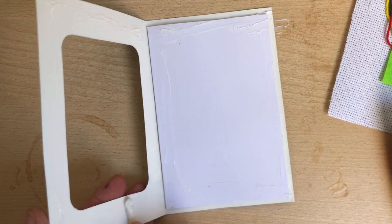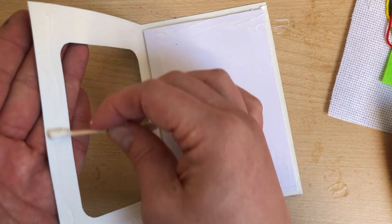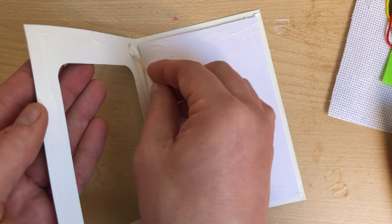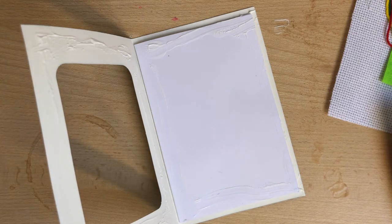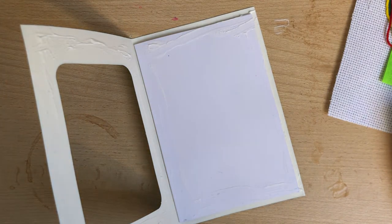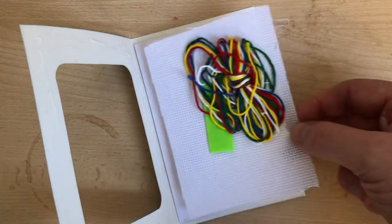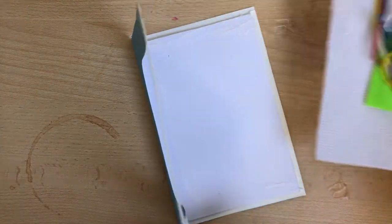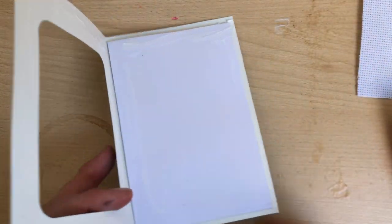I mean this will dry clear anyway so I'm not really fussed about the edge part. But obviously the idea is this will eventually go into here and then obviously seal it over the top there. So we'll put that to one side for that to glue.